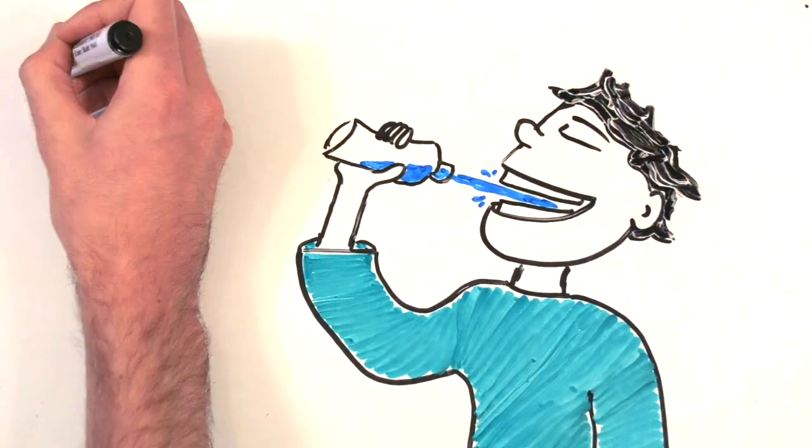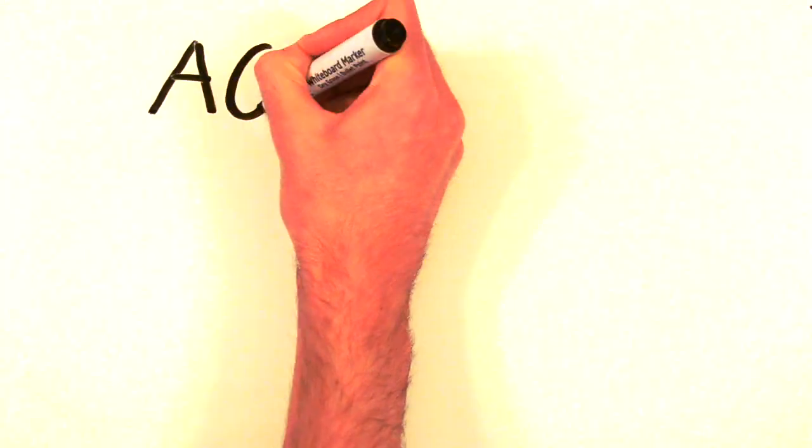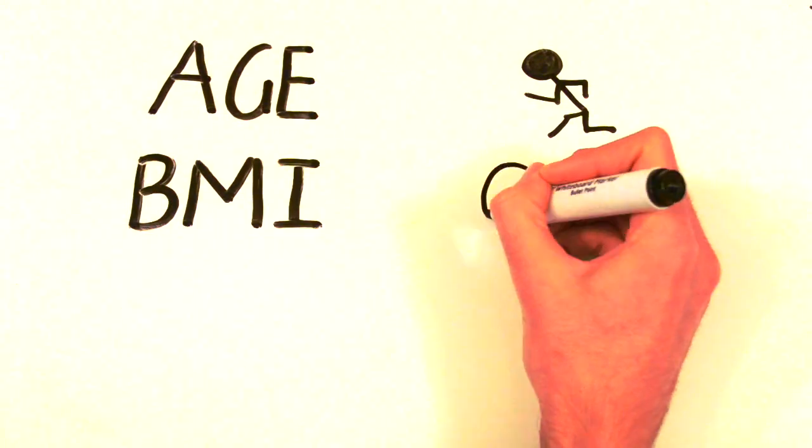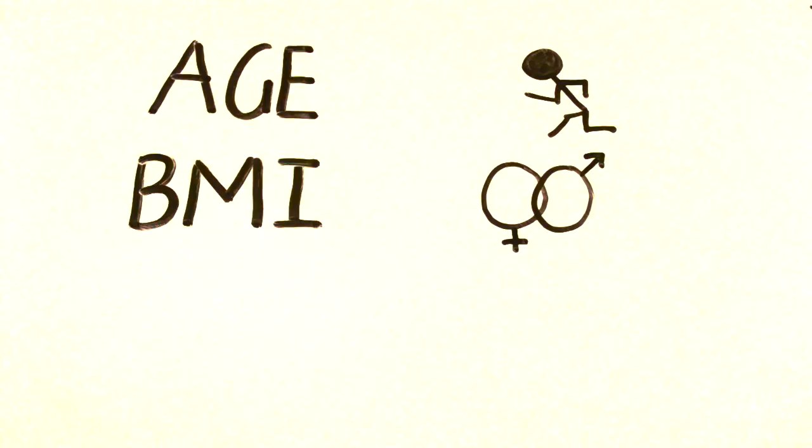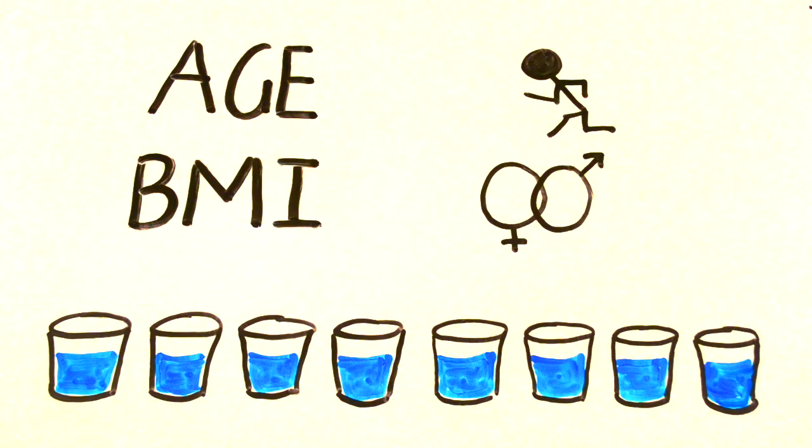But what does happen if we don't drink enough water? And what are some simple yet effective ways to help us drink the water we need? Well, our age, activity, body mass index and gender all have a role to play in how much water we need. However, the general rule of thumb is about 8 glasses of water for adults.